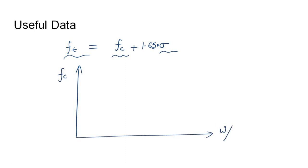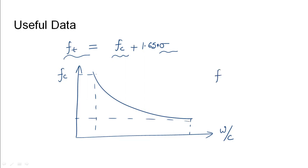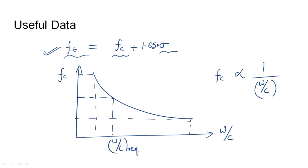The graph follows a downward trend: for lower water-cement ratios, the value of FC is higher, and for higher water-cement ratios, the value of FC is lower. So the compressive strength of concrete is inversely proportional to the water-cement ratio. Once the target strength is known, the corresponding water-cement ratio can be found and used for the mix.